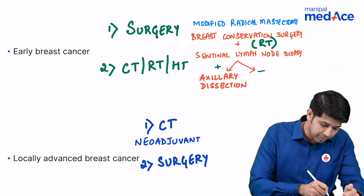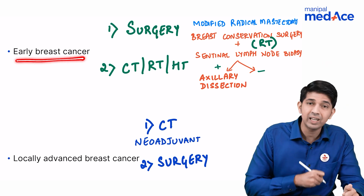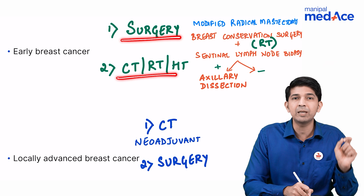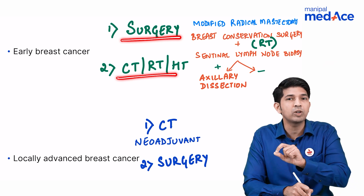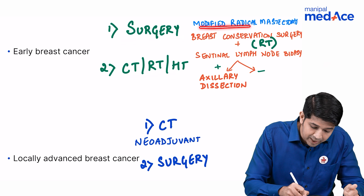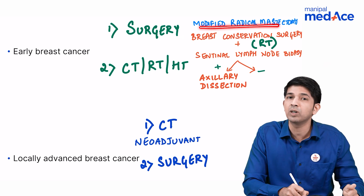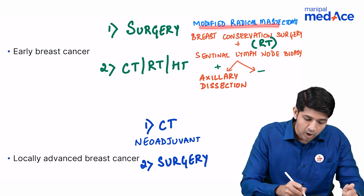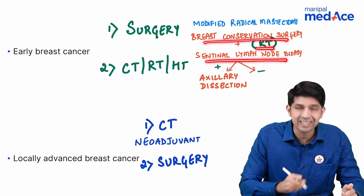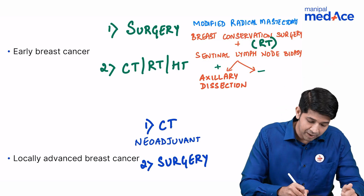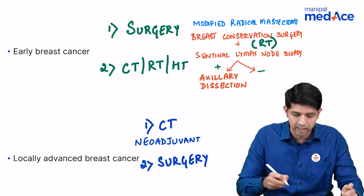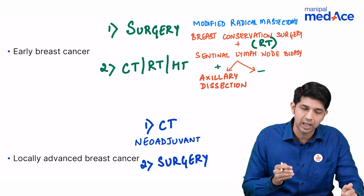Why is that important? For early breast cancer, first you're going to do surgery, followed by chemo, radio, or hormonal therapy — and that is called adjuvant treatment. The surgical modalities are either a modified radical mastectomy or a combination of BCS, radiotherapy, and sentinel lymph node biopsy. If sentinel lymph node biopsy is positive, go ahead with axillary dissection; if it's negative, you stop there.